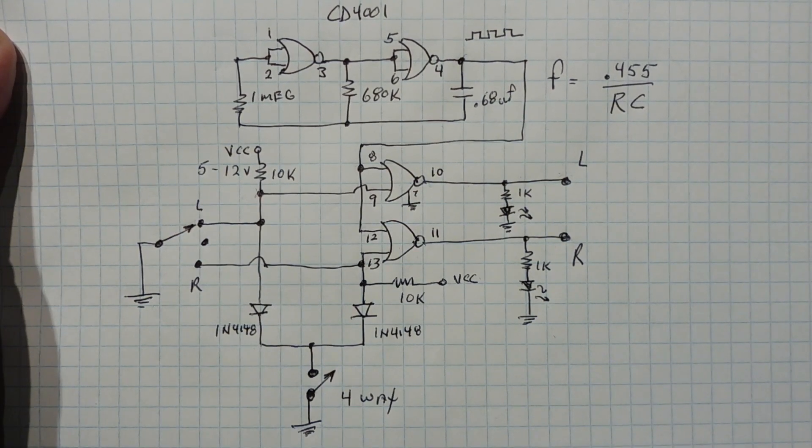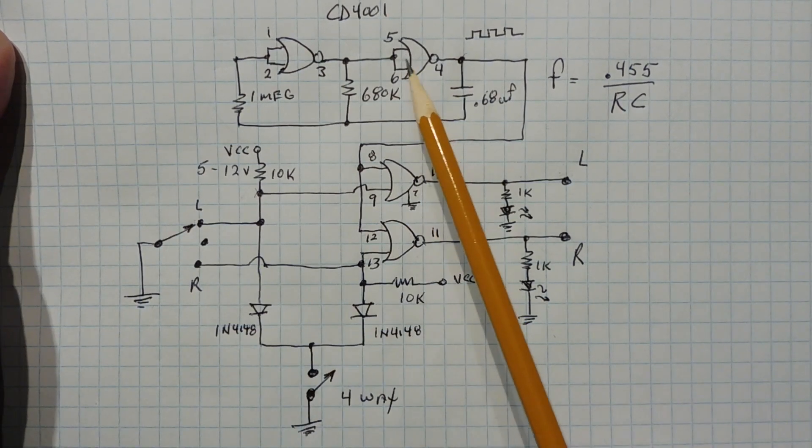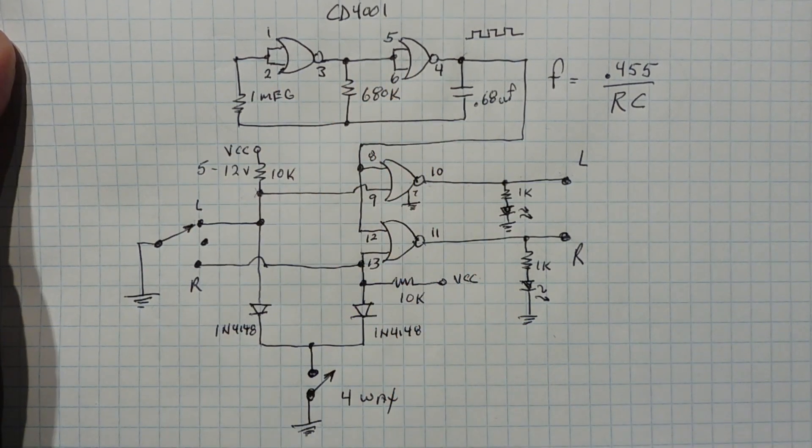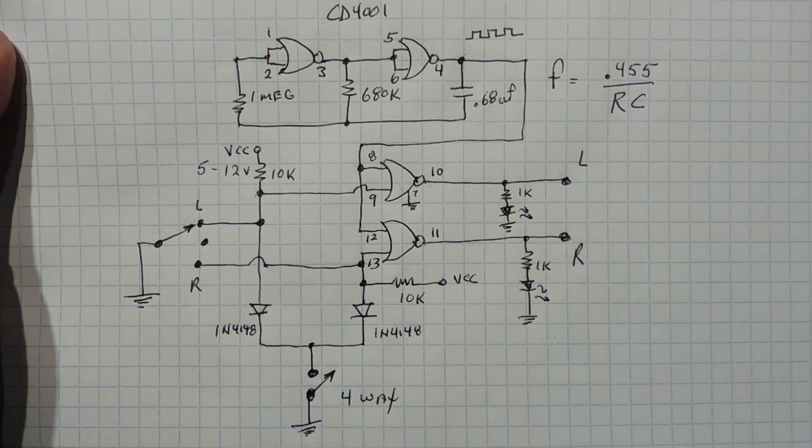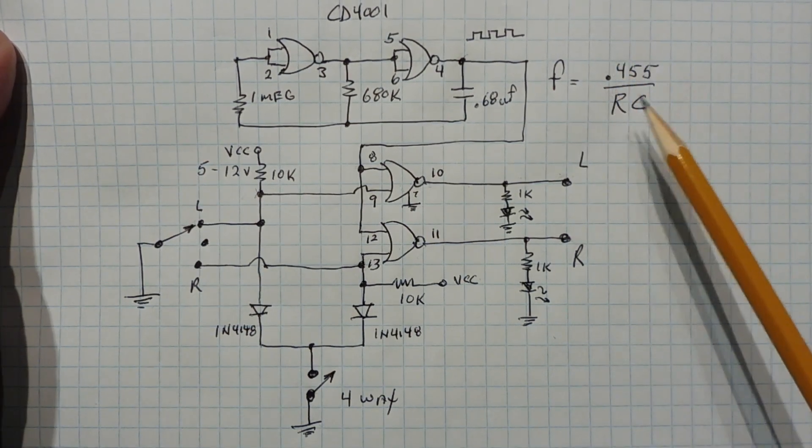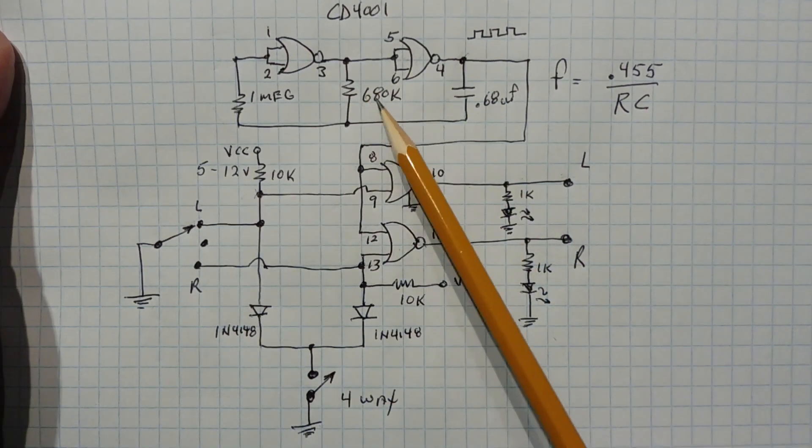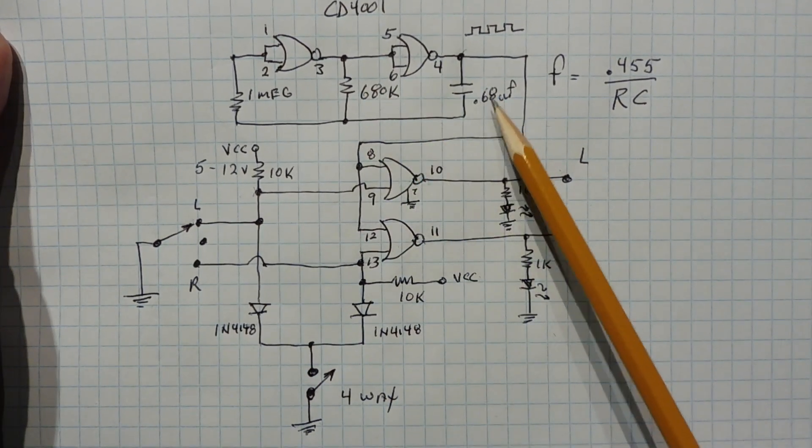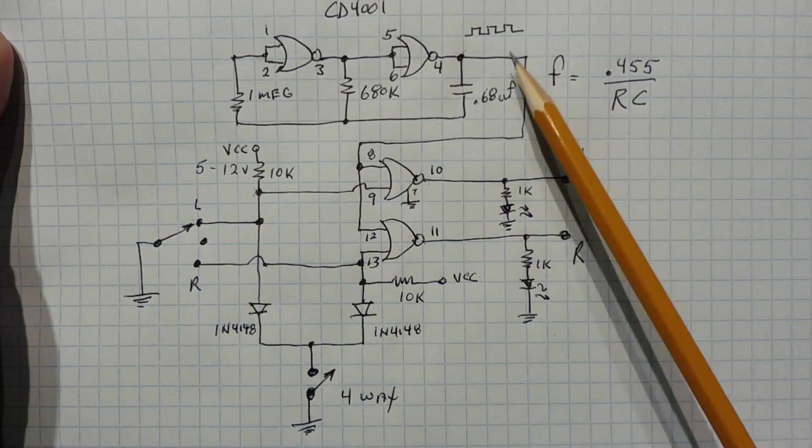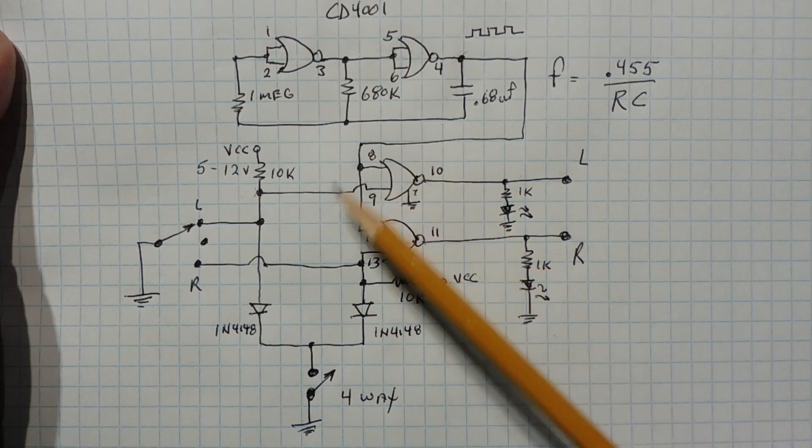So the hardest circuit is this RC oscillator which consists of two NOR gates. Now the inputs are connected together so they're configured as inverters. So the oscillator will oscillate at a certain frequency determined by this formula, determined by the R and C values. So with an R value of 680K and C value of 0.68 microfarads, we'll get an output frequency of one Hertz.